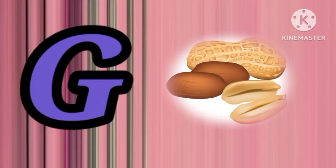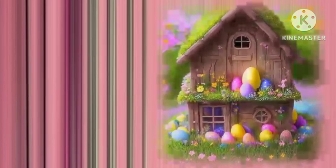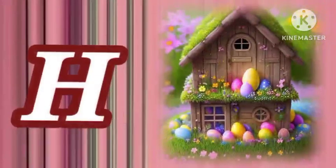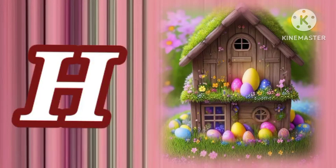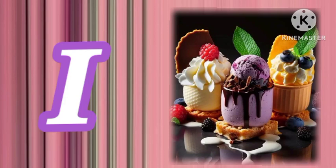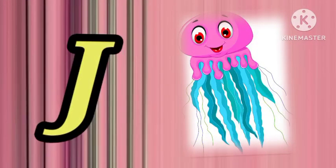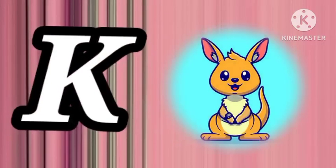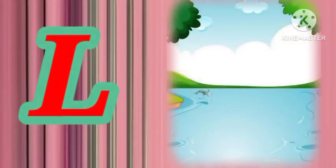G for donut, H for hut, I for ice cream, J for jellyfish, K for kangaroo, L for lake.